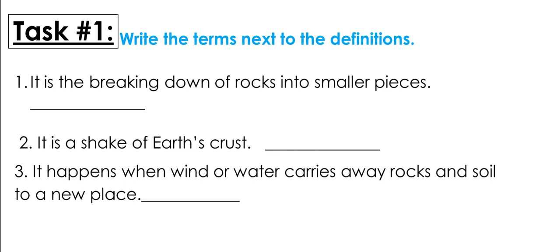Number one: the breaking down of rocks into smaller pieces — what is it? Write it down in any notebook. Number two: a shake of Earth's crust — what is it? Number three: it happens when wind or water carries away rocks and soil to a new place. Write your answers and then we'll check them together.